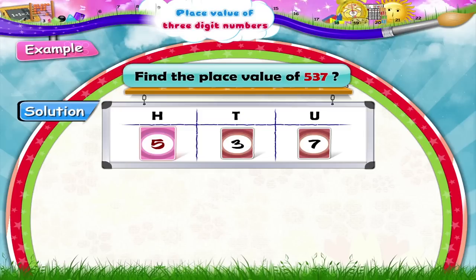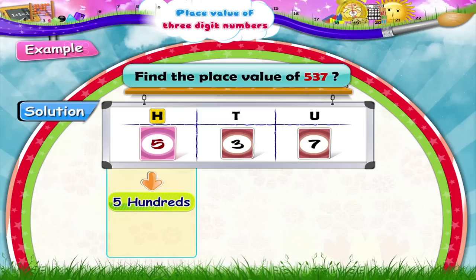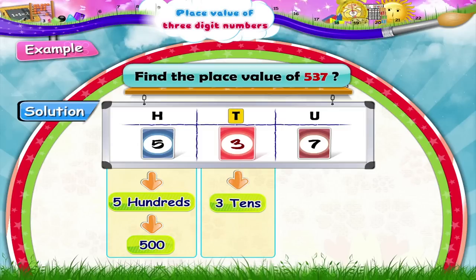5 is the hundreds place digit. So its place value is five hundreds, or five hundred. Can you now tell me the place value of 3? That's right — three is the tens place digit. So its place value is three tens, or thirty.